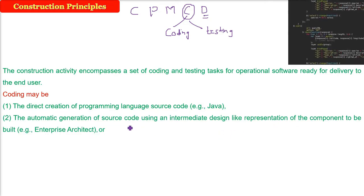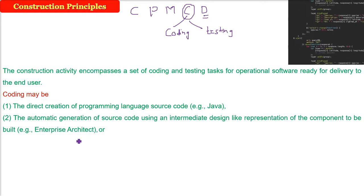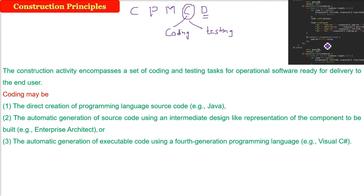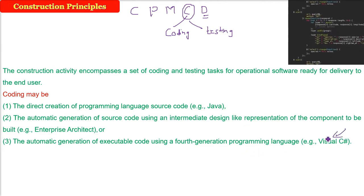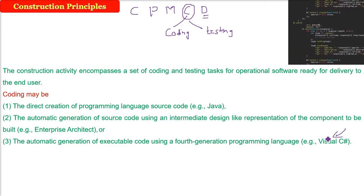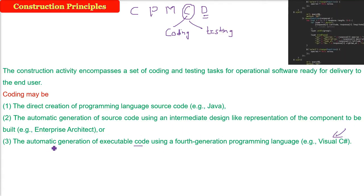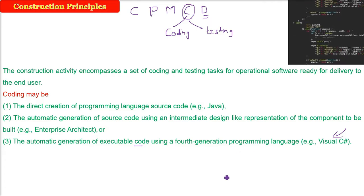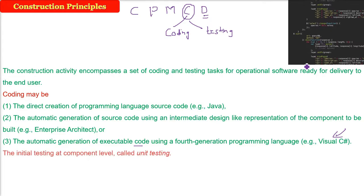Then there's automatic generation of source code with intermediate design, for example Enterprise Architect. There's also automatic generation of executable code using fourth generation programming languages like Visual C#. Normally we write code by ourselves or use pre-made code or components which we already designed or written.